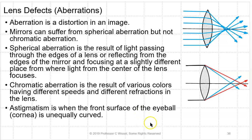Aberrations are distortions of an image. Mirrors can suffer from spherical aberration but not chromatic aberration. Spherical aberration results from light passing through the edges of a lens or reflecting from the edges of a mirror and focusing at different points than light from the center, producing a blurred image. Chromatic aberration results from various colors having different indexes of refraction in the material. Typically, short wavelengths are refracted more than long wavelengths, so the focal length of blue light is smaller than that of red light. Astigmatism occurs when the front surface of the eyeball or cornea is unevenly curved, giving blurry vision.